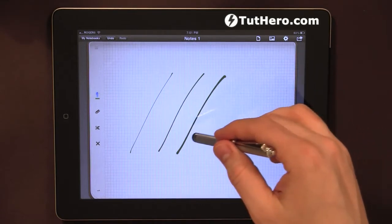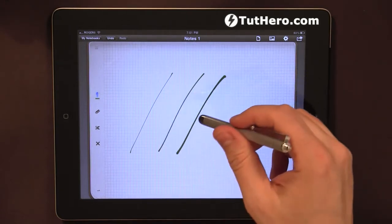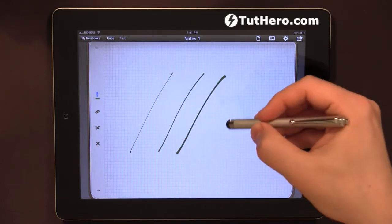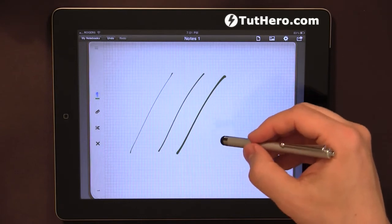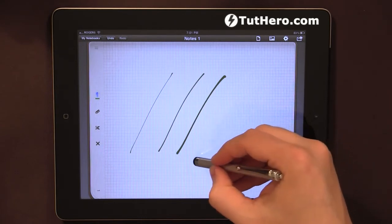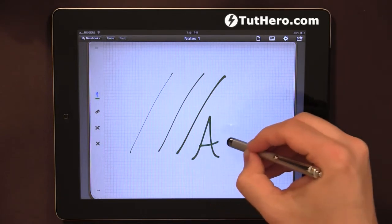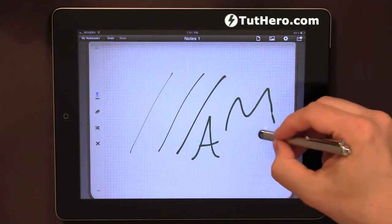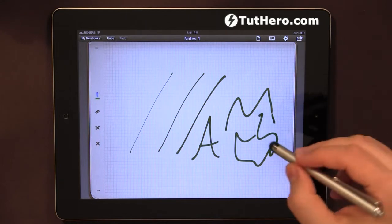To be honest, this app in terms of drawing and making annotations feels very natural. Whatever you do here feels very smooth. The lines, even if you move them around, don't have edges. It's very smooth.